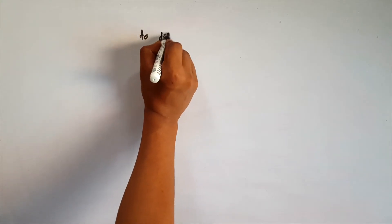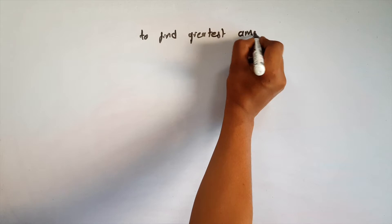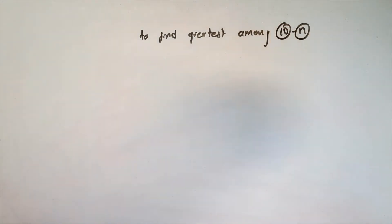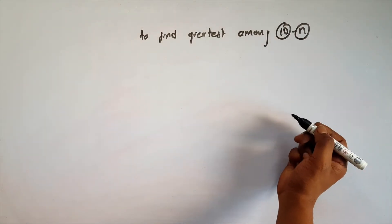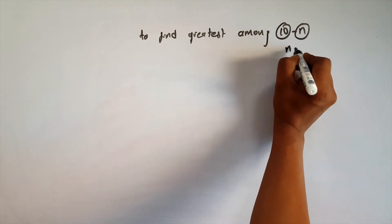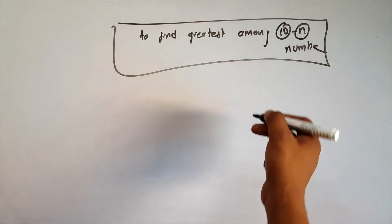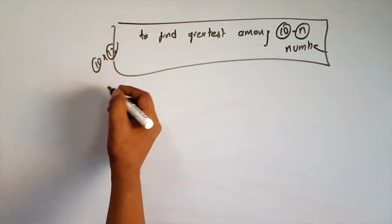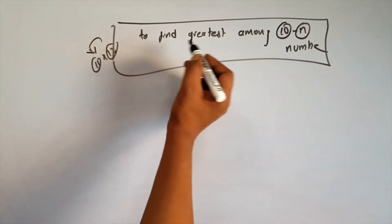Write a program in C to find the greatest among N numbers. This program is important for computer science C programming students. There are two levels: the simple form and the advanced form. The advanced form is very important.